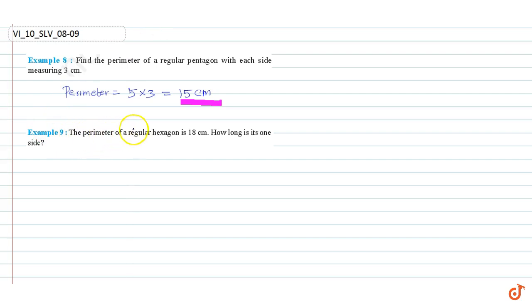Example 9: The perimeter of a regular hexagon is 18 cm. How long is one side?